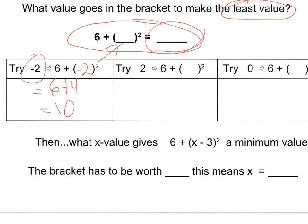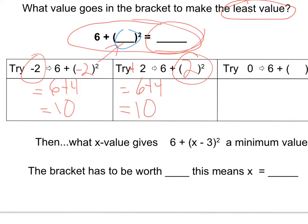When I put a negative into that bracket, altogether I get a larger value — the negative turns into a positive. Let's try positive 2. I put 2 in, 2 squared is 4, so I've got 6 plus 4 again, which is also 10. That's interesting. So no matter if I put negative 2 or positive 2 in the bracket, I get the same result. Why is that? It goes back to the idea that a negative times a negative is a positive — the product of two negatives is positive.